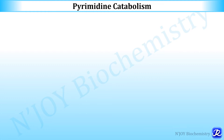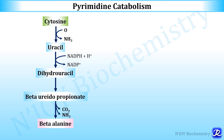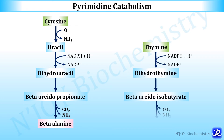Pyrimidine nucleotides undergo degradation via dephosphorylation, deamination, and cleavage of the glycosidic bond to liberate the nitrogenous bases cytosine, uracil, and thymine. These bases are degraded to highly soluble products: beta-alanine from cytosine and uracil, and beta-aminoisobutyrate from thymine. These amino acids undergo transamination to produce acetyl-CoA and succinyl-CoA. Pseudouridine cannot be metabolized and is excreted unchanged in the urine.